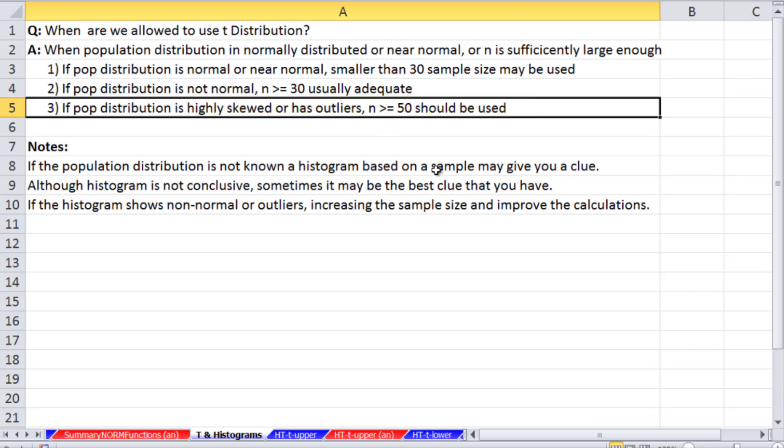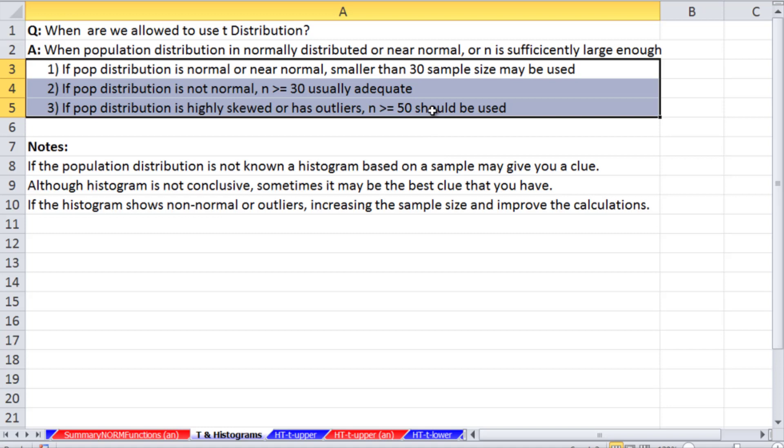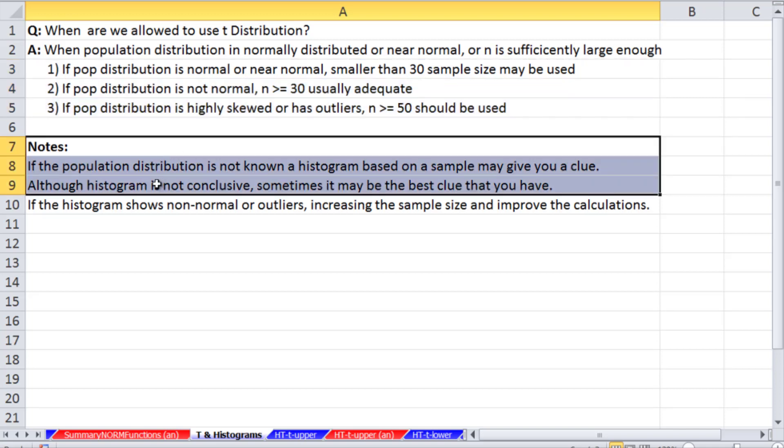Originally when the t-distributions were created, it was based on the assumption that the population distribution was normally distributed. But over the years, research has been done to show as long as n is big enough, then the predictions you make from the t-distribution tend to be pretty good. Now, you can run a histogram on your sample. It is absolutely not conclusive, but sometimes when you do not have data on the population, it may be the only clue that you have.